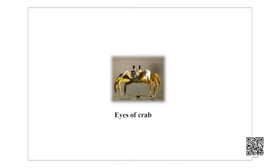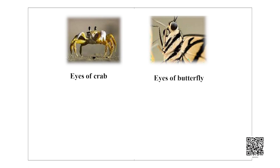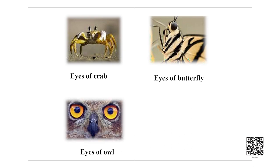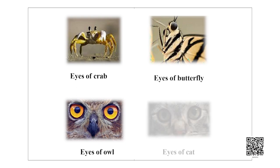Animals and birds have eyes that are slightly different from ours, serving different purposes. Crabs have small eyes that enable them to look all around. Butterflies have large eyes made up of thousands of little eyes, allowing them to see all around. Night birds, owls, and cats have a large cornea and large pupil to allow more light inside; their retina has a large number of rods and only a few cones, so they see well at night but not in the day. Can you write the features of eyes of day birds like eagles?